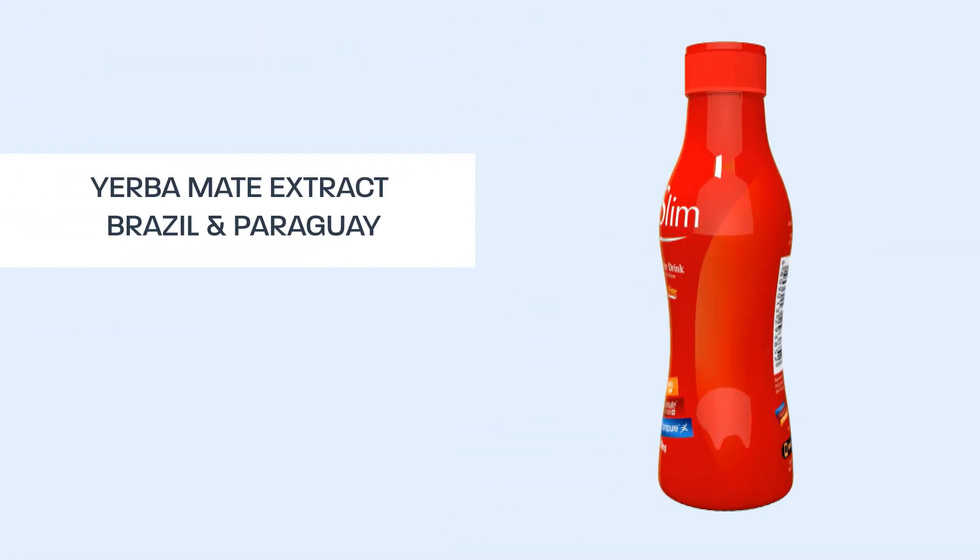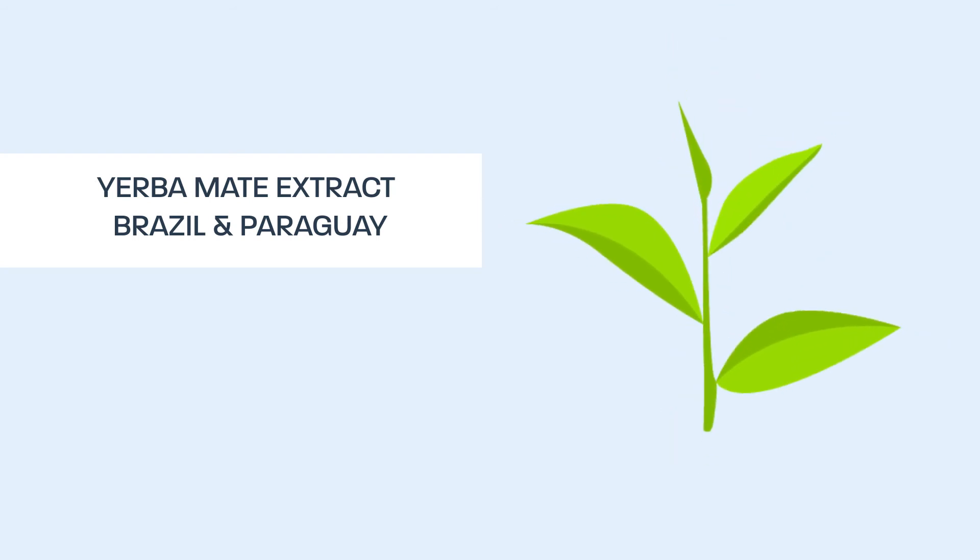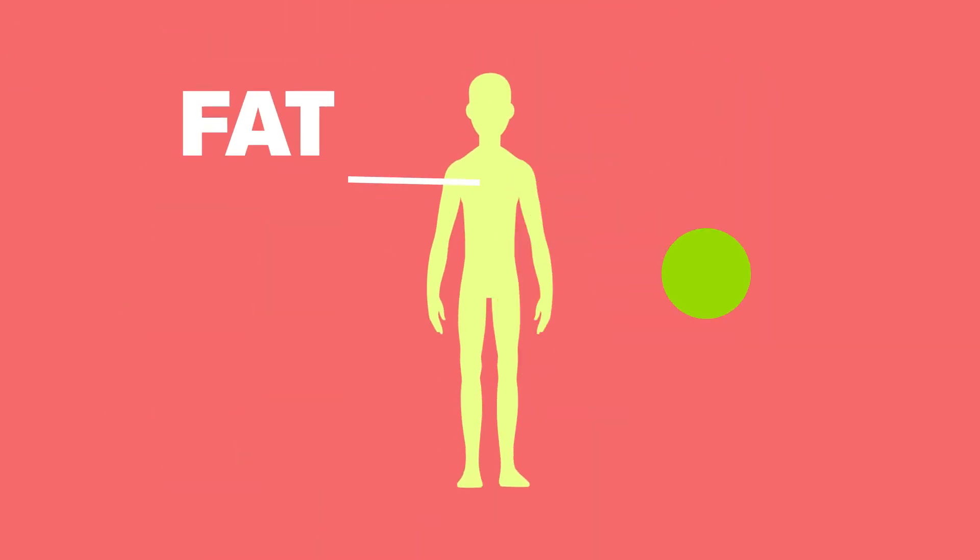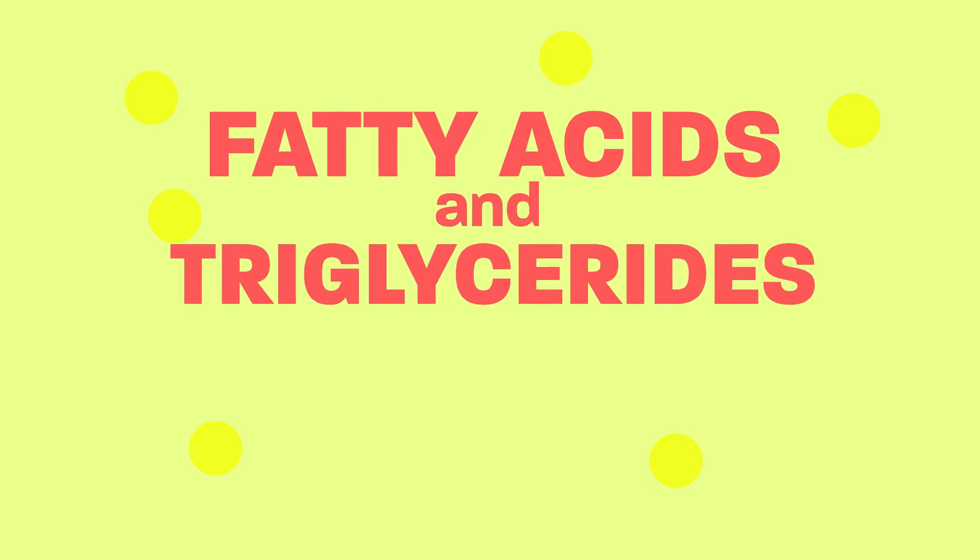Mycelin, for example, contains Yerbamate extract, derived from green tea leaves native to Brazil and Paraguay. Yerbamate is known to help trim down fat by breaking down stored giant lipid molecules into smaller particles called fatty acids and triglycerides.